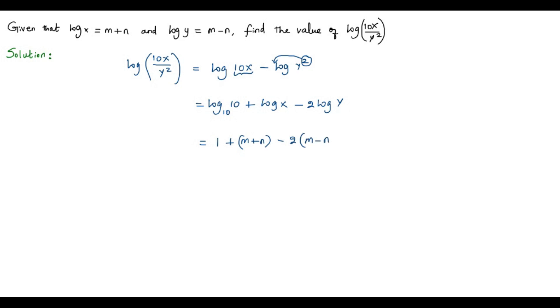So for log y, we can substitute m minus n. So 1 plus m plus n. Now we can distribute this negative 2 for both m and n. So negative 2 times m is negative 2m, and negative 2 times negative n is positive 2n. Now we have to simplify this expression by combining the like terms. When I simplify plus m and minus 2m, I get minus m, and when I combine plus n plus 2n, I get plus 3n. So the value of log of 10x by y squared is equal to 1 minus m plus 3n.